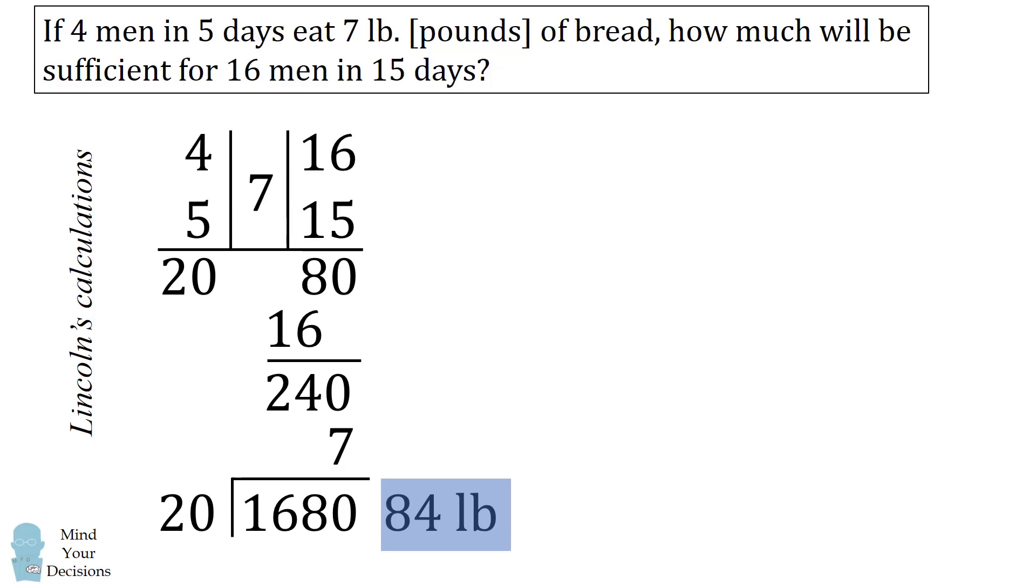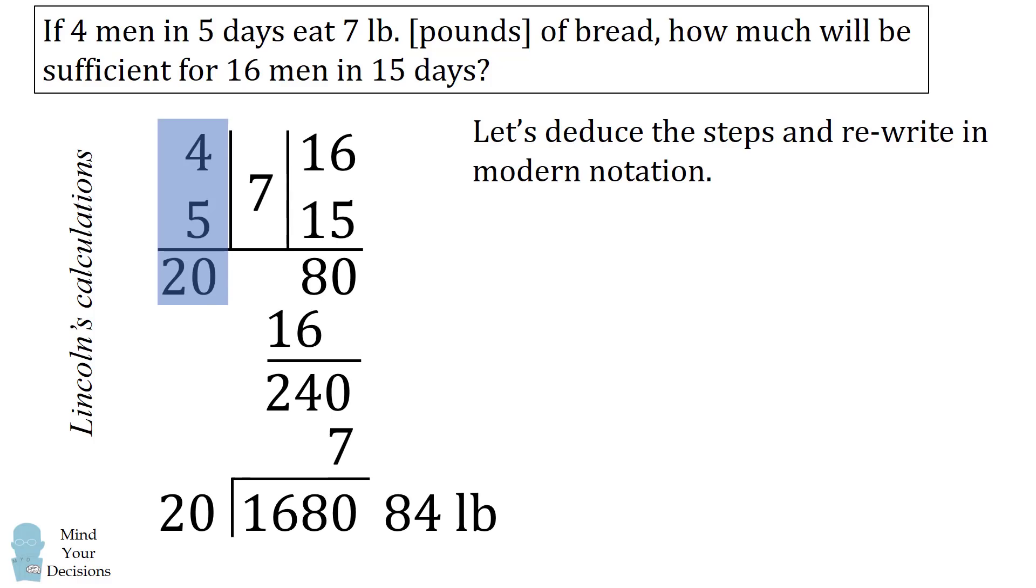Now it's sort of a puzzle to figure out exactly what he did. So I took the time to try and deduce what his steps were. So let me rewrite his notes in modern notation. The first step that I would see in his notes is we have 4, 5, and 20. So I would guess he took the 4 men times the 5 days to equal a total of 20 man days.